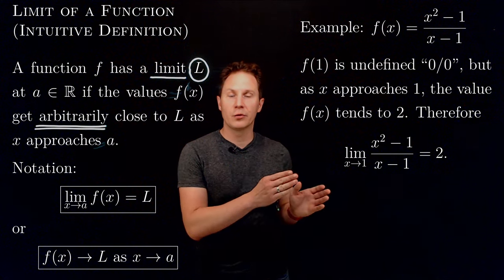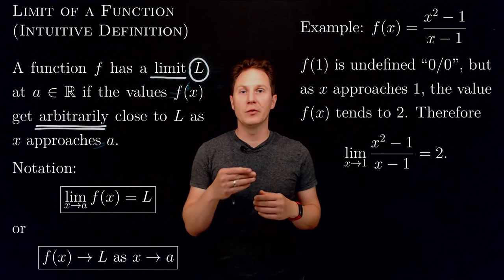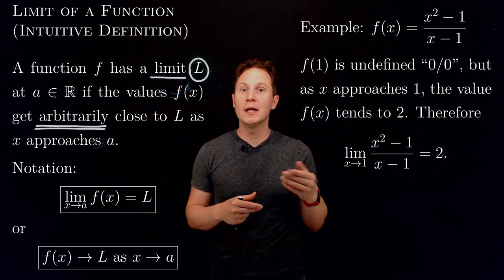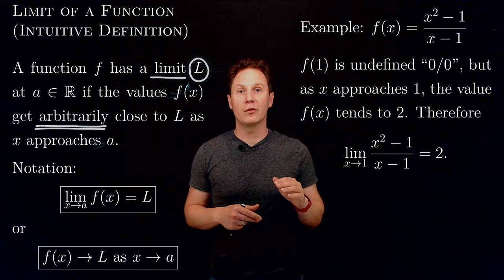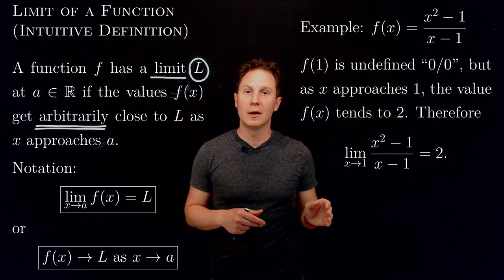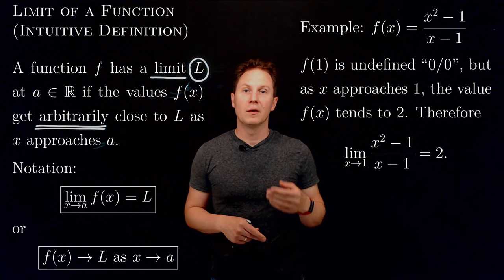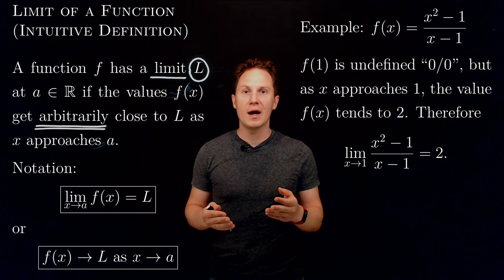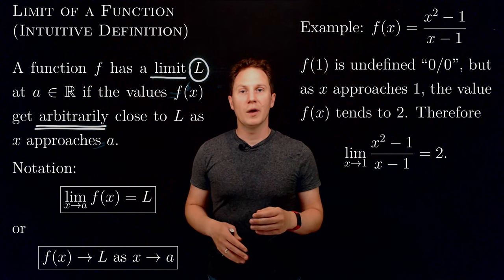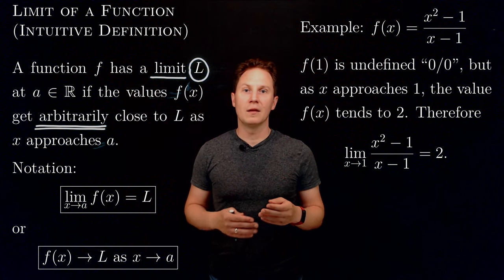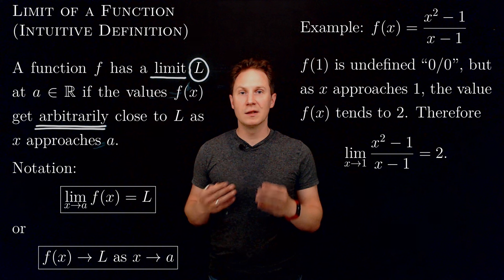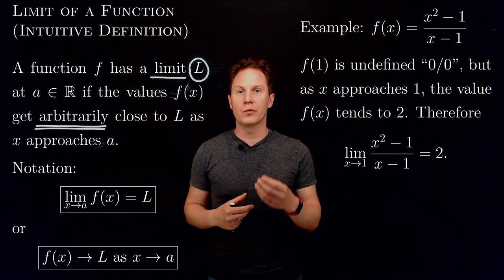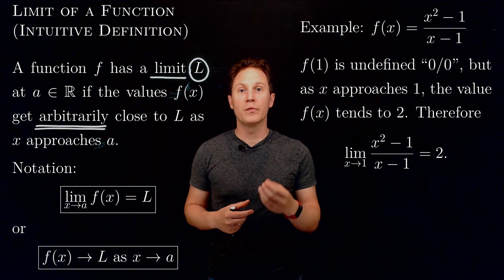We verified this graphically by plotting the graph of the function and seeing what happens to f(x) when x approached 1 from either side. Finding limits numerically or graphically is fine as long as it works, but in certain cases that can be difficult or even misleading, so it is important that we develop more robust tools or approaches to finding limits.